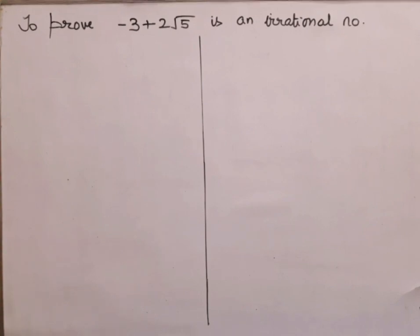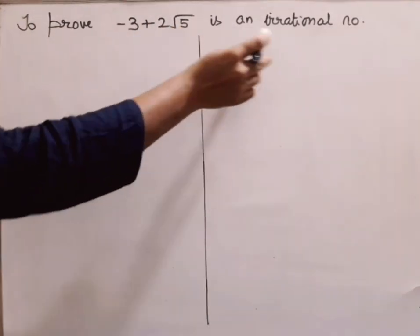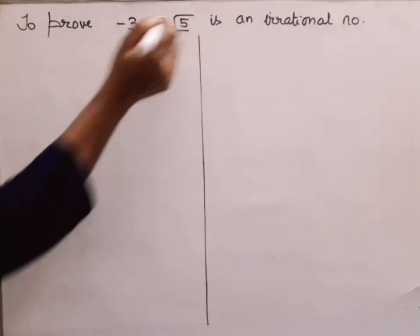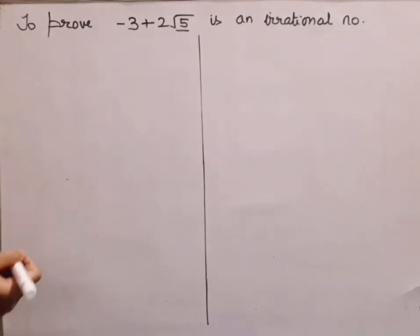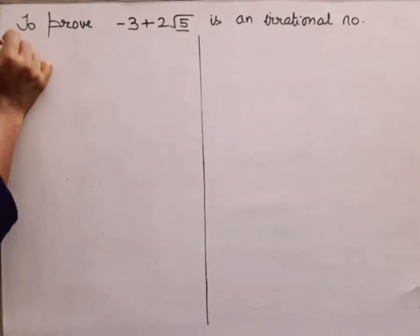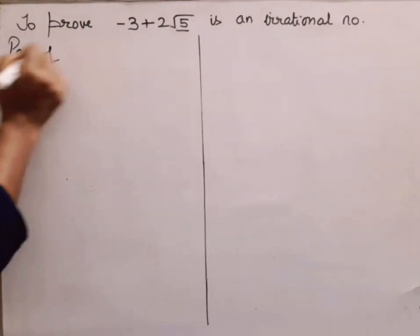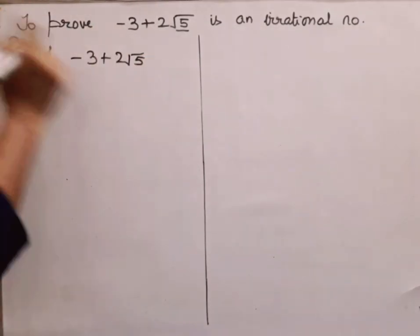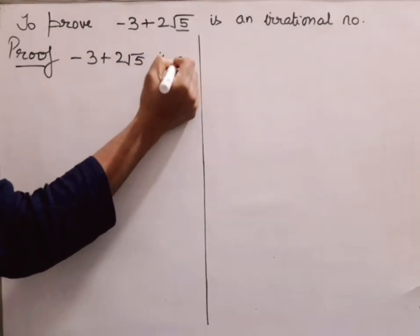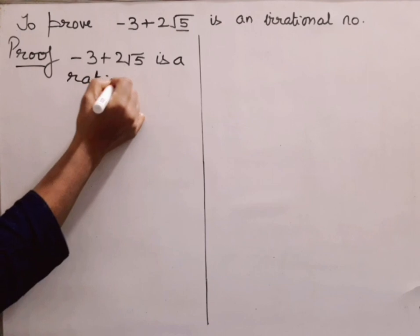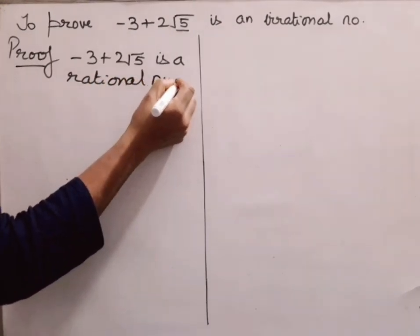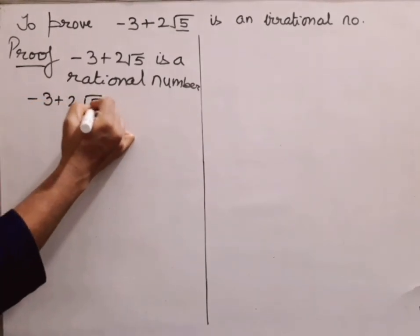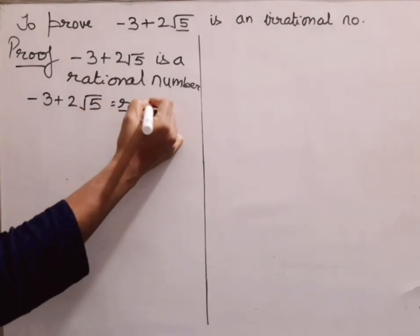Now I am taking a question to prove that -3 + 2√5 is an irrational number. To prove this, first I need to prove that √5 is an irrational number — you can do this like the earlier video. Here, I will take the opposite assumption: that -3 + 2√5 is a rational number, equal to R, where R is a rational number.